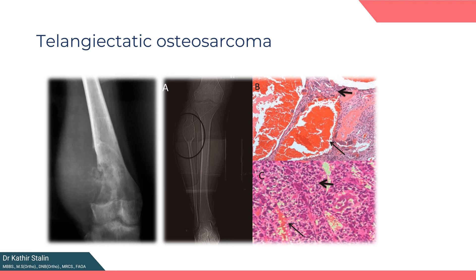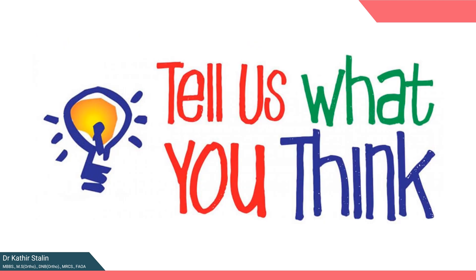Lastly, telangiectatic osteosarcoma. The tissue of this lesion can be described as a bag of blood with few cellular elements. Its radiographic features are those of a destructive, lytic, expansive lesion. Telangiectatic osteosarcoma occurs in the same location as an aneurysmal bone cyst, and the radiographic appearance of both can be easily confused, so extreme attention is needed when interpreting these X-rays.